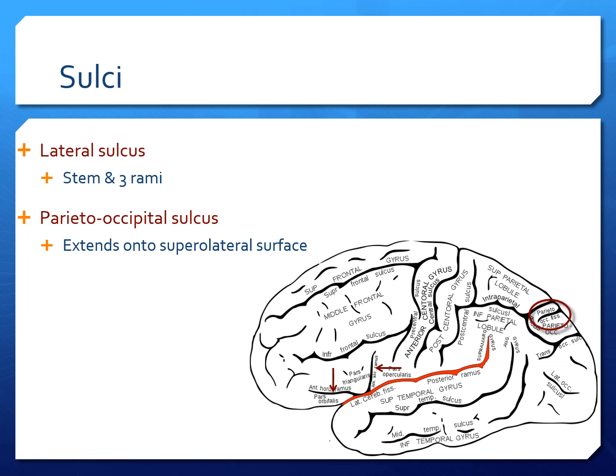The lateral sulcus has got three rami. The actual red color shown here is the posterior ramus of the lateral sulcus. And we can see two arrows pointing at the sulci which are the anterior horizontal ramus and ascending ramus. So there are three rami: anterior horizontal, ascending ramus, and the posterior ramus. There is a sulcus which extends onto the superior lateral surface which is encircled here. It is the parieto-occipital sulcus.